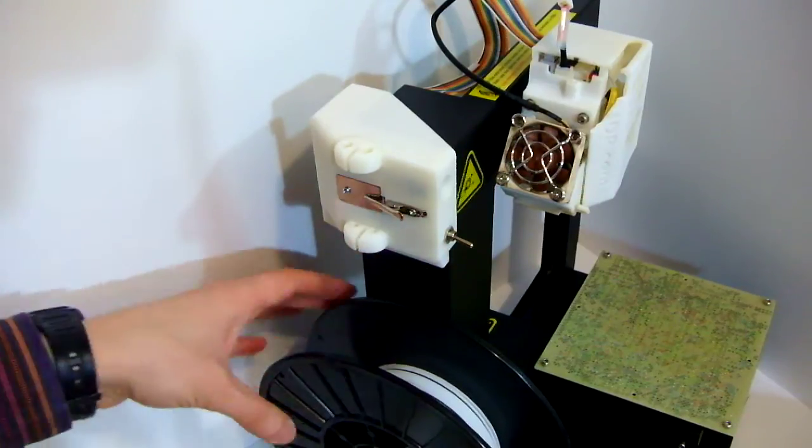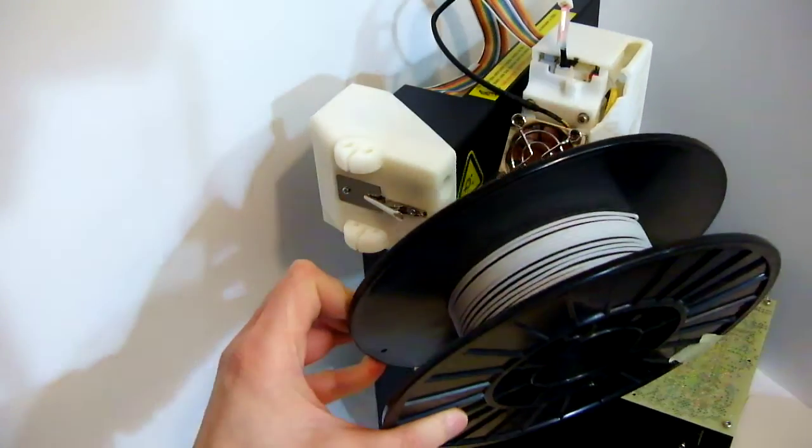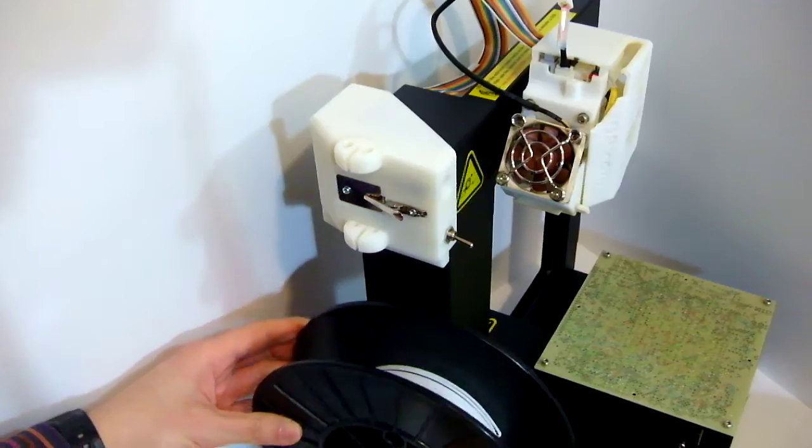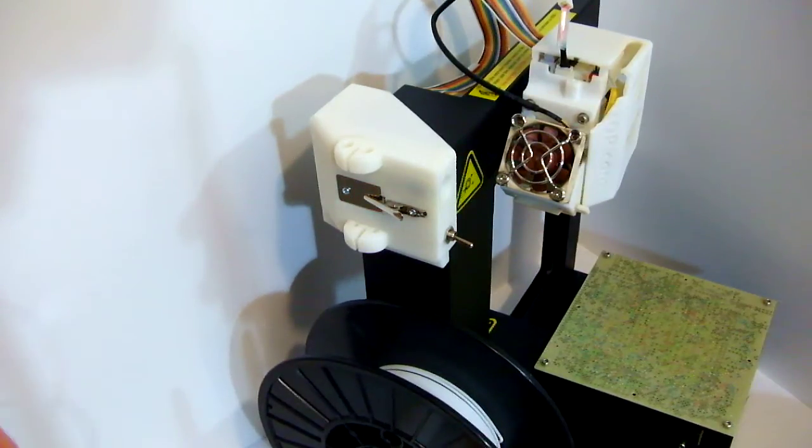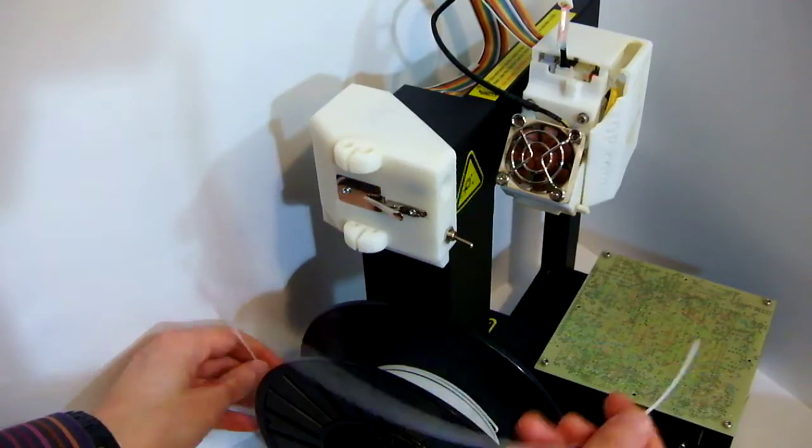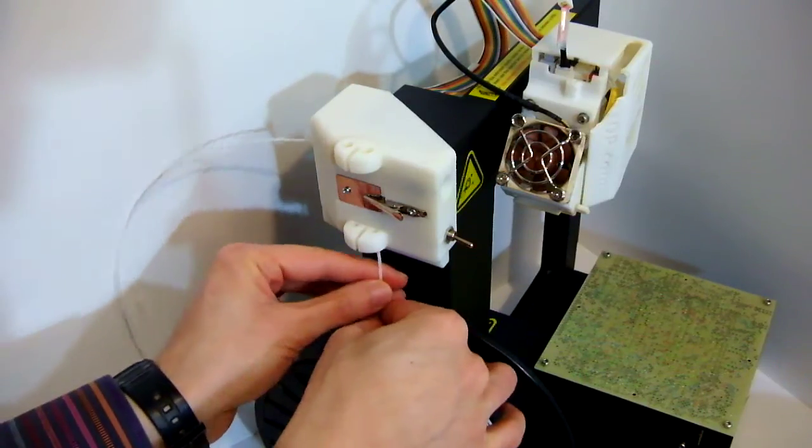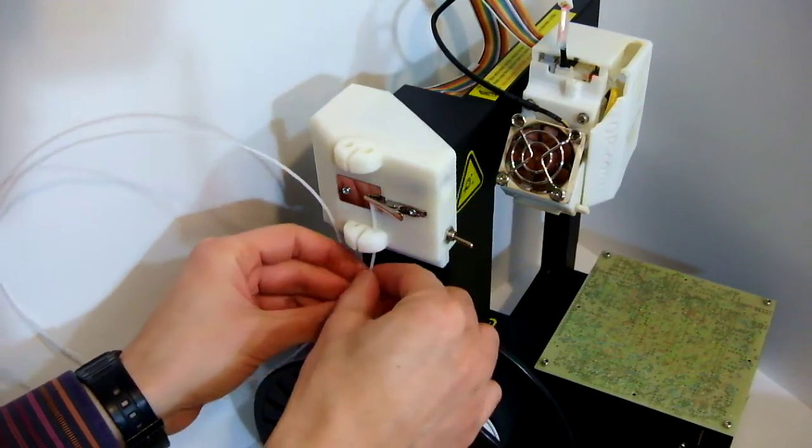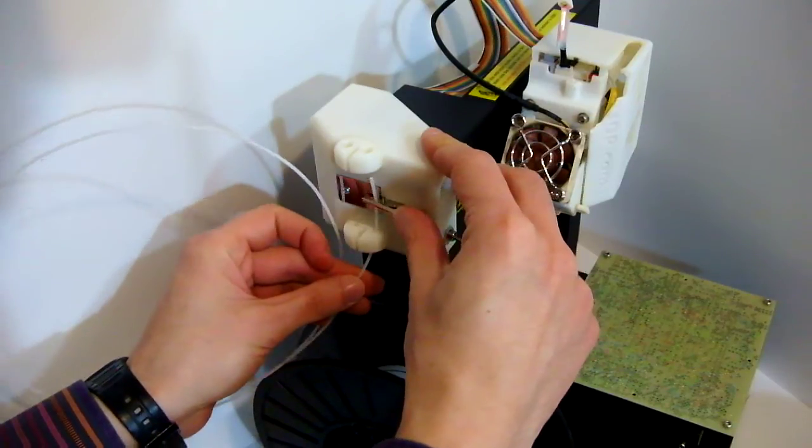If we have a filament spool that is about to run out, before printing we take the filament and put it through the filament guide, through this crocodile clip.